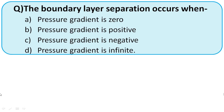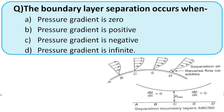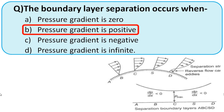Boundary layer separation occurs when pressure gradient is: (A) zero, (B) positive, (C) negative, (D) infinite. From the earlier diagram and equation, boundary layer separation occurs when dp/dx > 0, that means positive pressure gradient. So option B is the right option.